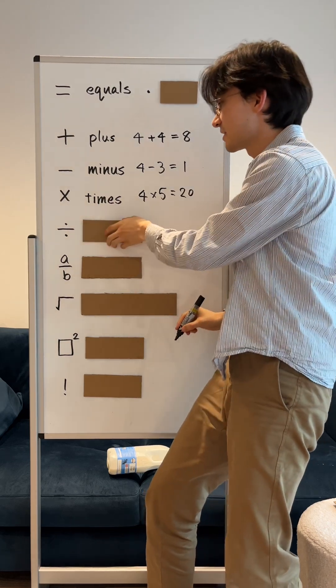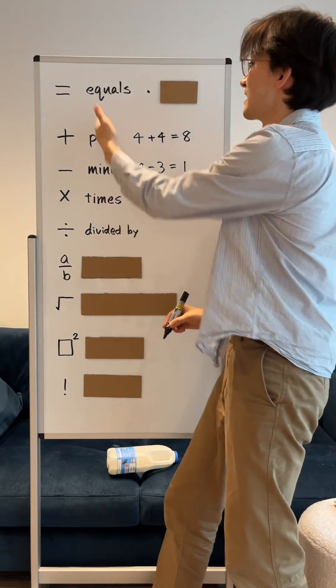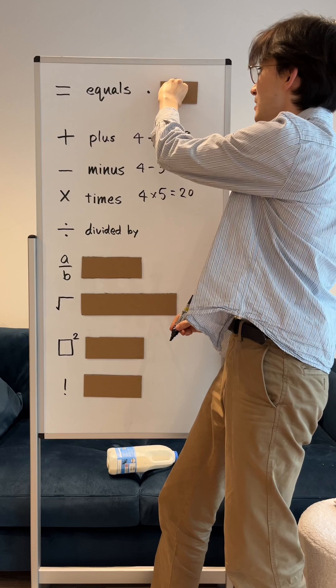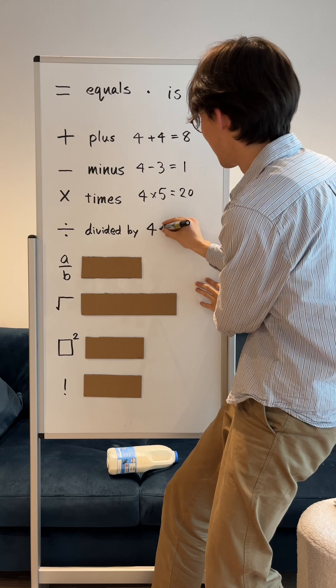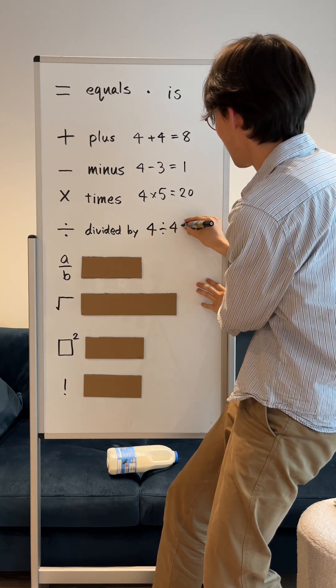This divided by. By the way, there's another way to say equals. Is. Let's try it. So 4 divided by 4 is 1.